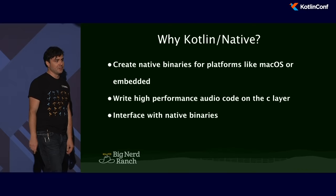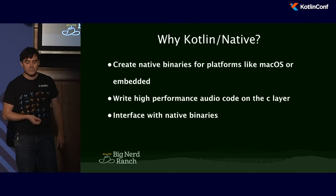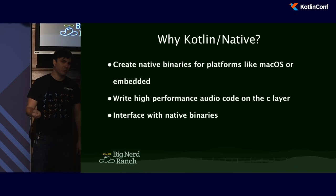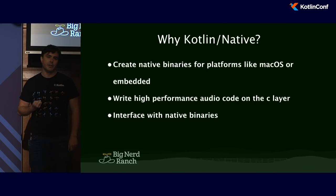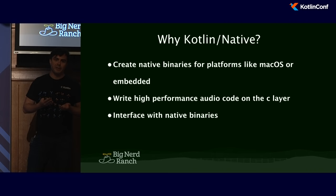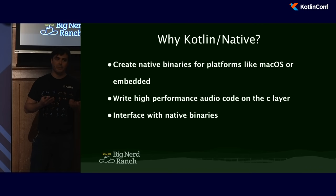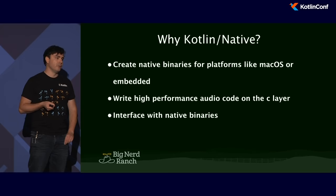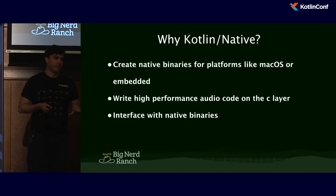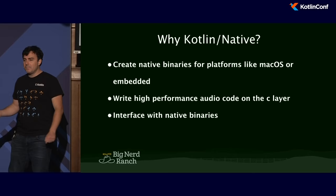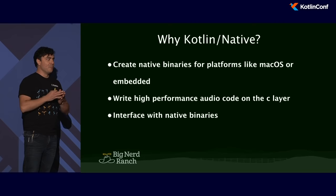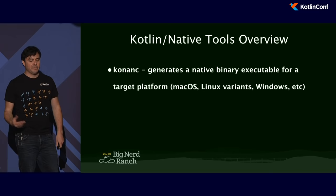A quick explanation of why Kotlin Native for this side project of trying to build a Eurorack module: Kotlin Native offers the ability to create native binaries for platforms like macOS or embedded. Raspberry Pi could be considered an embedded platform, and I can actually generate a binary for that embedded platform using the Kotlin Native toolchain. If I could use Kotlin — the language I'm already familiar with — to create a native binary that would run on embedded, I have the best of both worlds. Also, I can write high-performance audio code on the C layer, and Kotlin Native lets me interact with that C layer. I can also interface with any of the other native binaries and the vast C ecosystem.